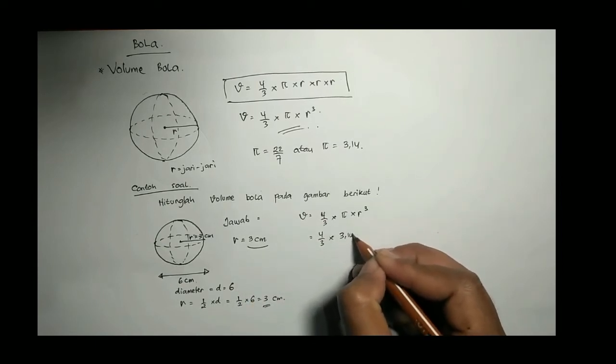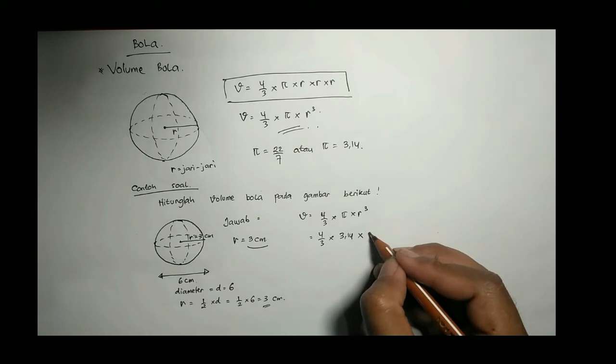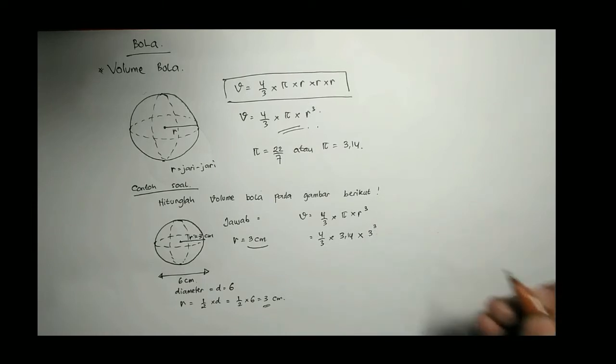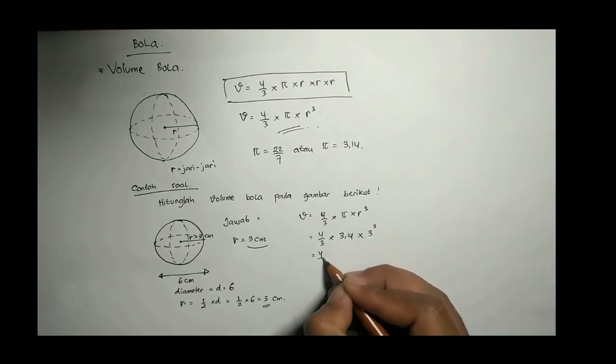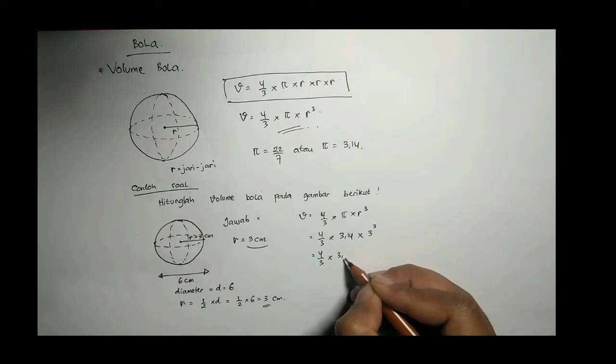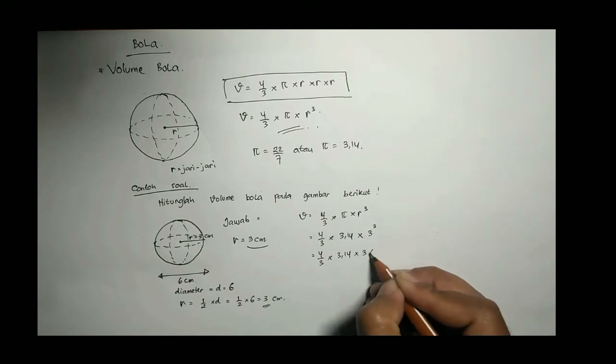4/3 dikali, karena R nya bukan kelipatan 7 berarti kita pilih π 3,14 dikali R atau 3 pangkat 3. 4/3 dikali 3,14 dikali 3 kali 3 kali 3.